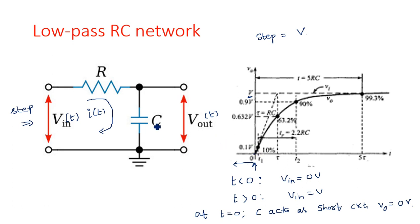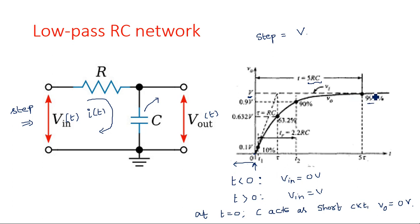Slowly, as current passes through it, the capacitor starts charging. The maximum voltage it tries to charge to equals the input voltage V. After approximately five time constants (5×RC), the capacitor reaches 99.3% of the maximum voltage — this is the steady state.